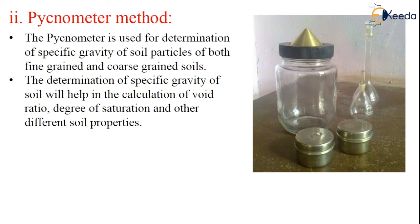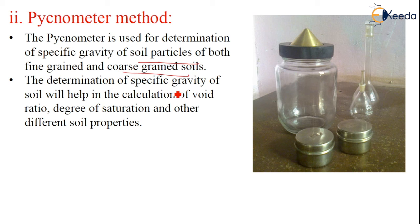Coming to the pycnometer method for specific gravity. The pycnometer method is used for the determination of specific gravity of soil particles of both fine-grained and coarse-grained soils. The determination of specific gravity of soil helps in calculation of void ratio, degree of saturation, and other different soil properties.